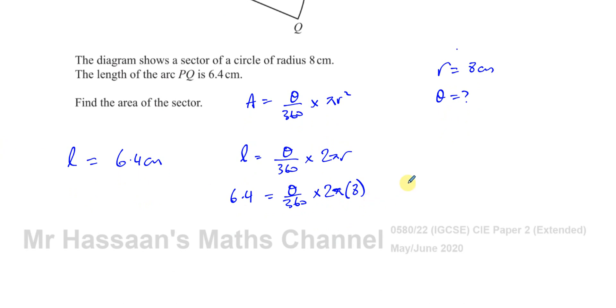Okay, so we can say that theta, therefore, is 6.4 times 360 over 16 pi. Just multiply both sides by 360, divide both sides by 16 pi, and that will give us what theta is.